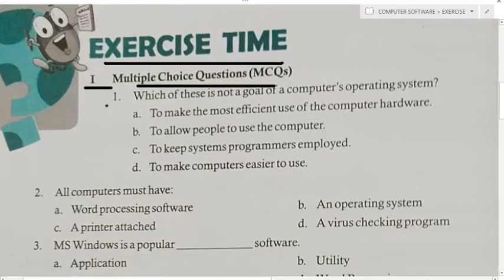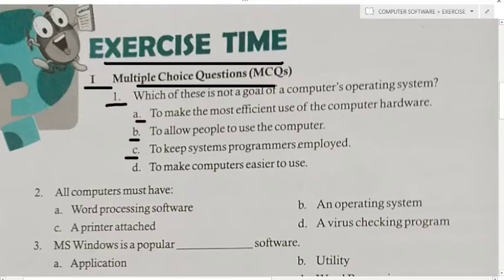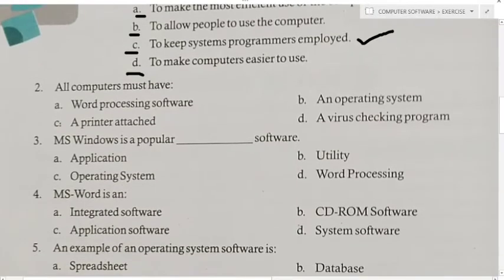First MCQ: Which of these is not a goal of a computer's operating system? Options: A) To make the most efficient use of computer hardware, B) To allow people to use the computer, C) To keep system programmers employed, D) To make computer easier to use. Answer is C — to keep system programmers employed. Computer operating system ka goal system programmers ko karerat rakhna nahi hota.